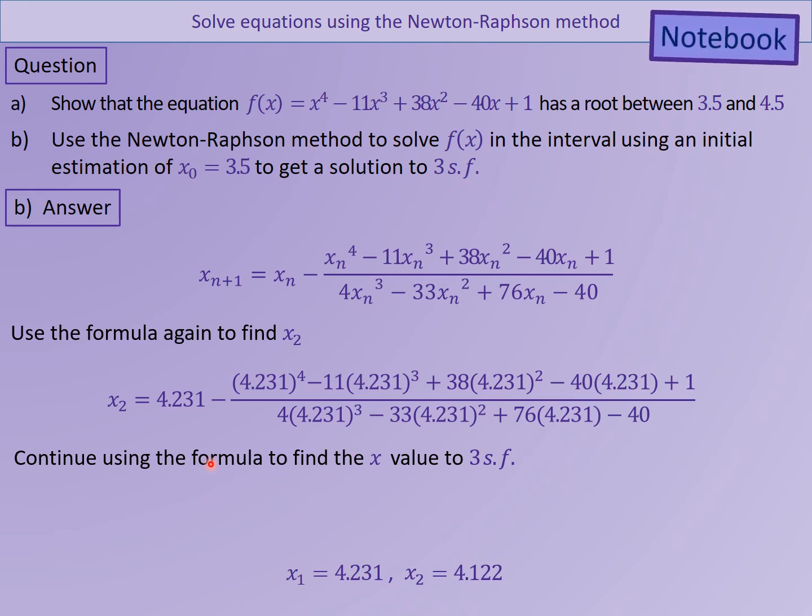So I've got my calculator, if you've got the ANS set up, I'll remind you how to do that. To use the ANS button on your calculator, type in 3.5 and press equals, then your calculator knows that 3.5 is your first answer. Once you do that, then you could type in this formula just here. But instead of xn, you use the ANS button on your calculator. So ANS minus ANS to the power 4, minus 11, ANS cubed, so on and so on. Once you've typed that all in once, then when you press equals, out will pop 4.231. Then all you need to do again is press the equals button. And what that does is that's become your new ANS, your new ANS answer.